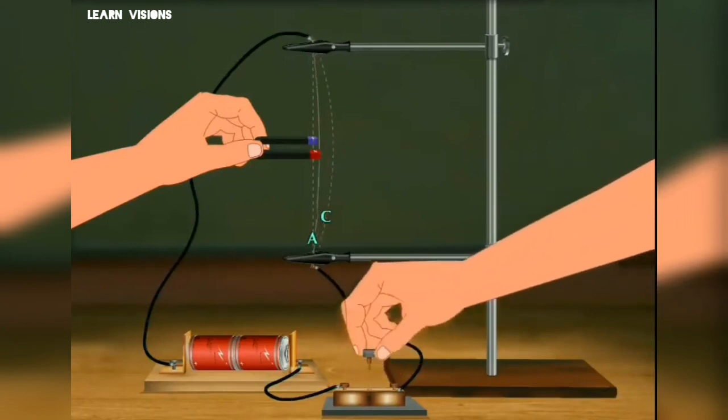Now when the plug key is opened, the wire is back at its point A. Which shows that only in the presence of current and magnetic field the force acts.